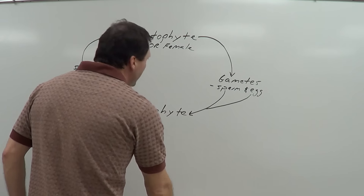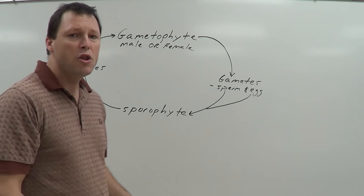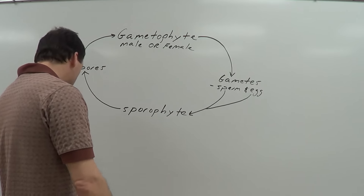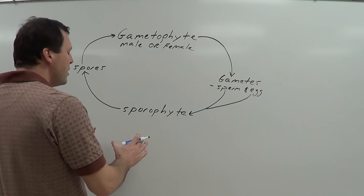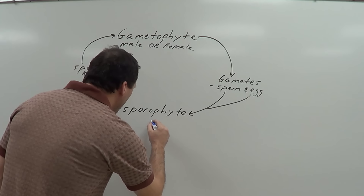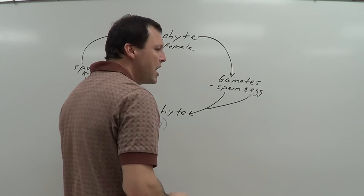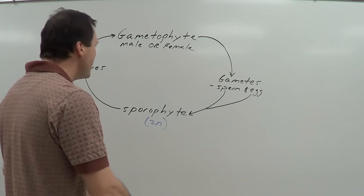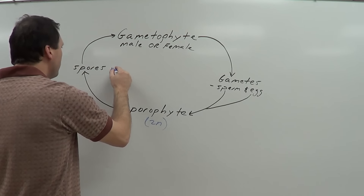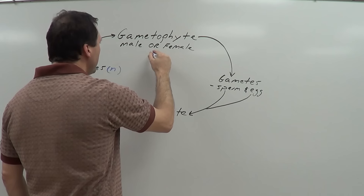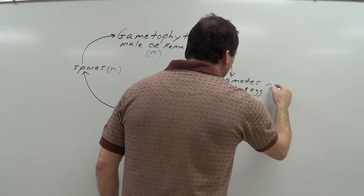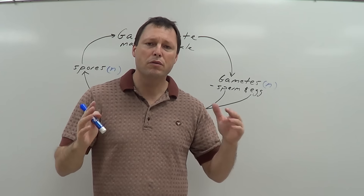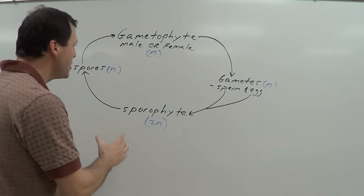Now let's write down the ploidy — the number of sets of chromosomes an organism has. Sporophytes are going to be 2N, meaning they have two of each type of chromosome, two sets. And everybody else — the spores, the gametophyte, and the gametes — are all going to be N, meaning they're haploid: one set of chromosomes, one of each type.